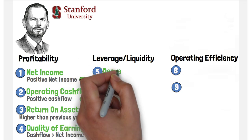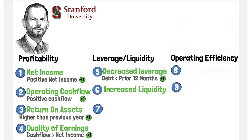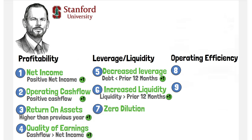Decrease in leverage: if the ratio of long-term debt is lower than the previous year, we get one point. Increase in liquidity: if the current ratio is higher than last year, we get one point. Absence of dilution: one point is given if the company did not issue any new shares in the preceding year.